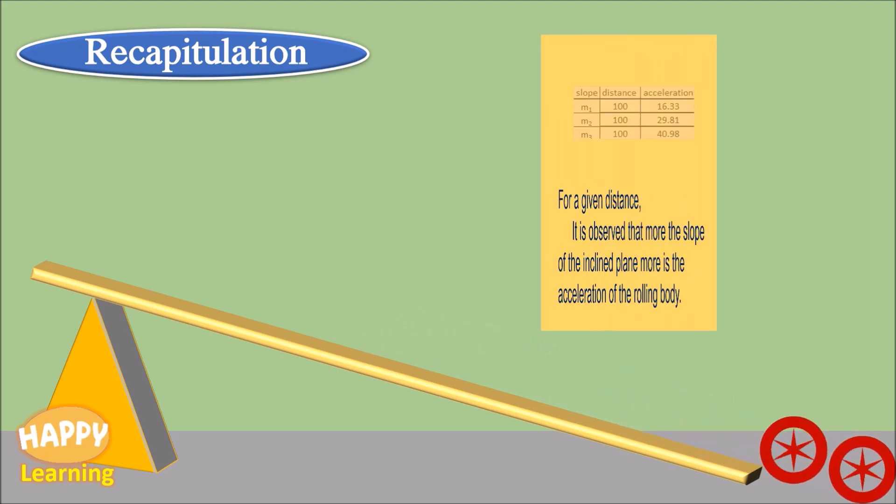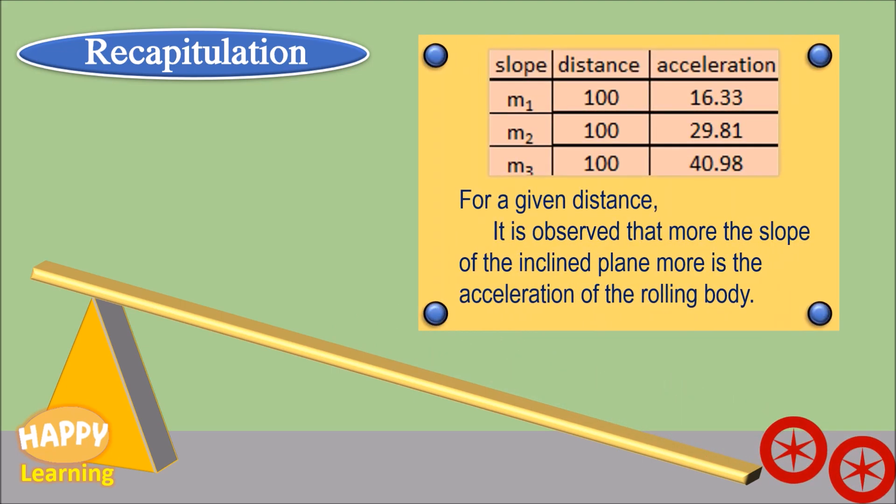Point 2. For a given distance, for example 100 cm, for various slopes m1 m2 m3 corresponding accelerations are tabulated. From this for a given distance it is observed that more the slope of the inclined plane more is the acceleration of the rolling body.